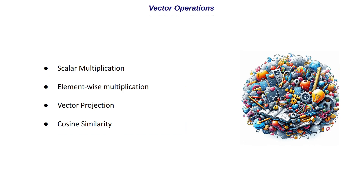These are the four main vector operations we will be discussing today: scalar multiplication, element-wise multiplication, vector projection, and cosine similarity. We are not going to discuss only how to calculate these operations but also how they are used in deep learning, so that we get a better intuition of how the whole deep learning and neural network works.